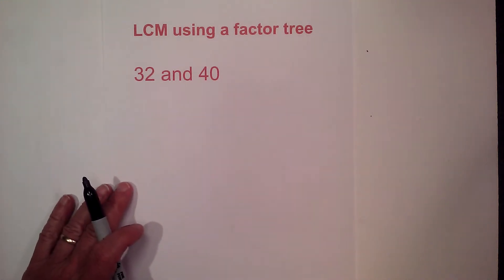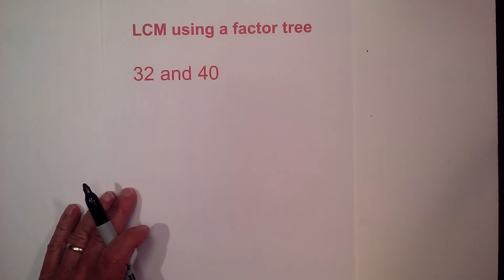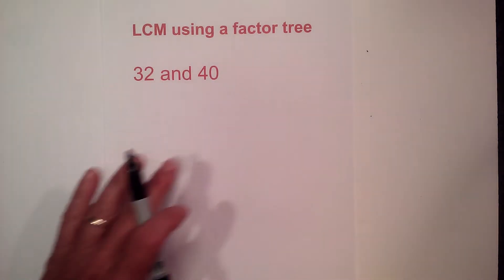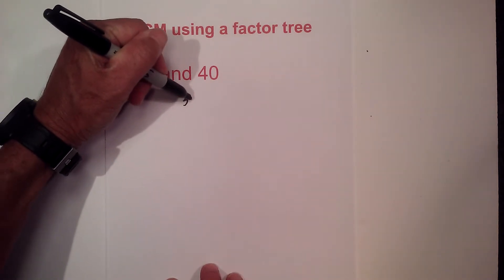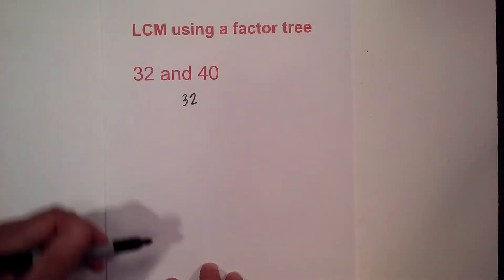In this video let's find the LCM of 32 and 40. An LCM is the least common multiple that 32 and 40 divides into evenly. I like to use a factor tree so let's start finding the prime factors of 32.